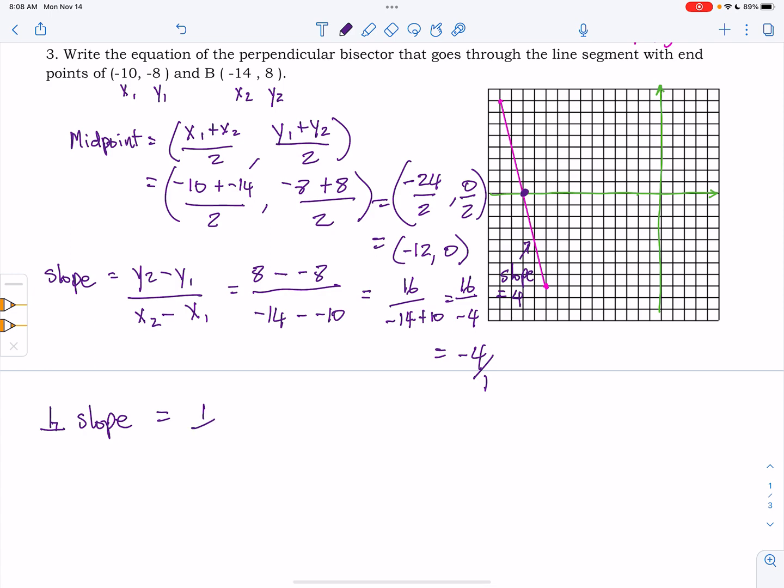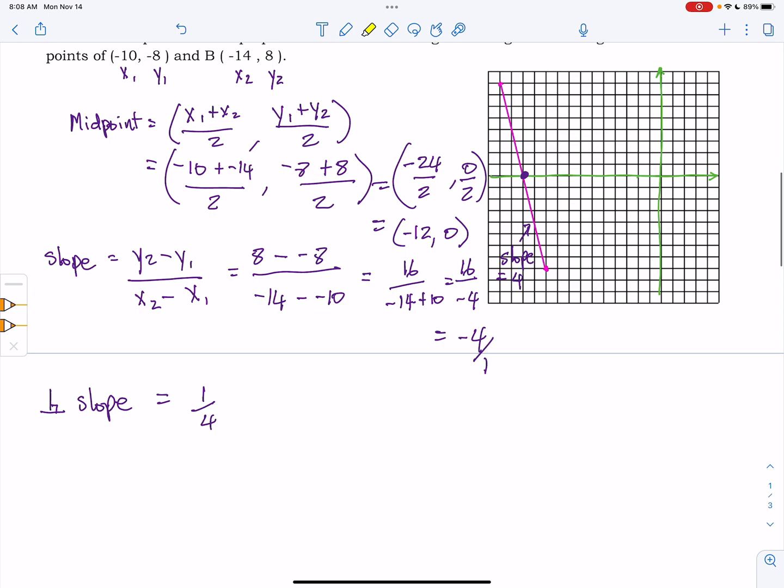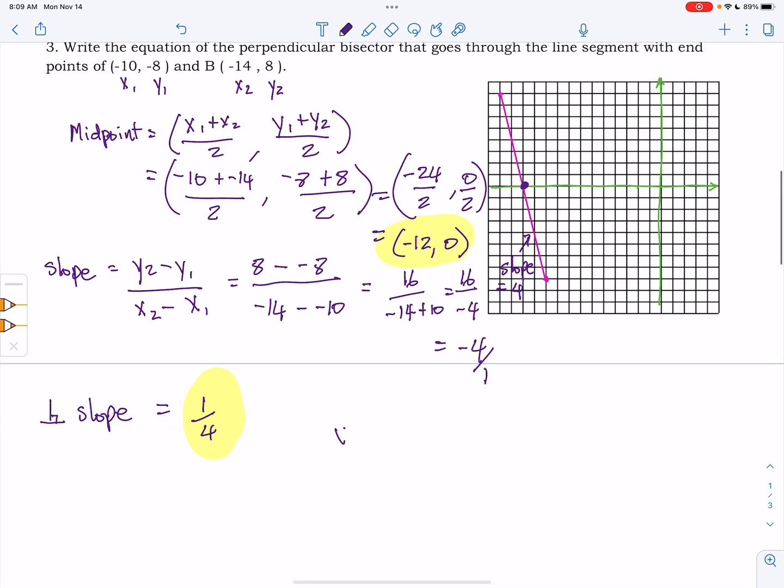we get 1 over 4. So the perpendicular slope is 1 fourth. Now we have two things that we need. We have a slope and we have a point.